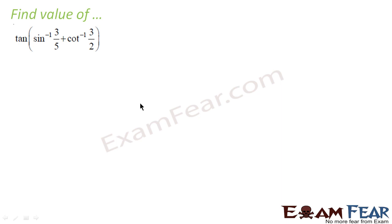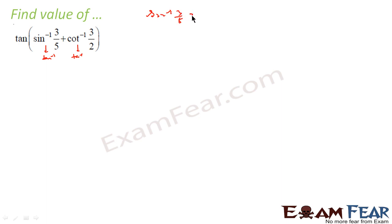Let's take the last example: tan of [sin inverse(3/5) + cot inverse(3/2)]. To solve this, the first thing we have to do is convert everything into tan inverse form. Once both are in tan inverse form, we can use the formula tan inverse a + tan inverse b and then apply tan to get the value.